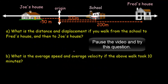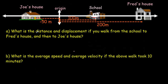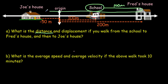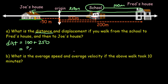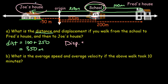Here's another question based on the same neighborhood. Let's look at the distance first. Starting from the school and heading to Fred's house is 100 meters. Then from Fred's house all the way back to Joe's house is 200 plus 50 meters, so 250 meters. The total distance is 100 plus 250, which equals 350 meters. Notice that we don't put a plus or minus sign — distance is always positive. For the displacement, it's a vector, so we need a plus or minus sign, and it only depends on the initial and final points — the school and Joe's house. Drawing a vector from that initial position to the final position gives 150 meters to the left, so displacement is negative 150 meters.